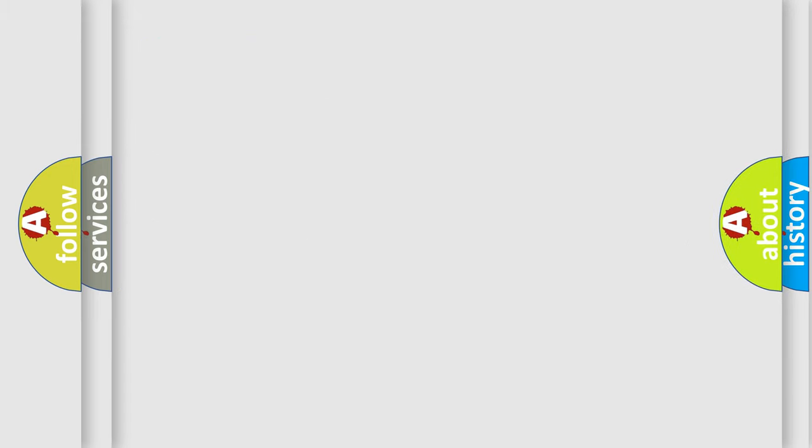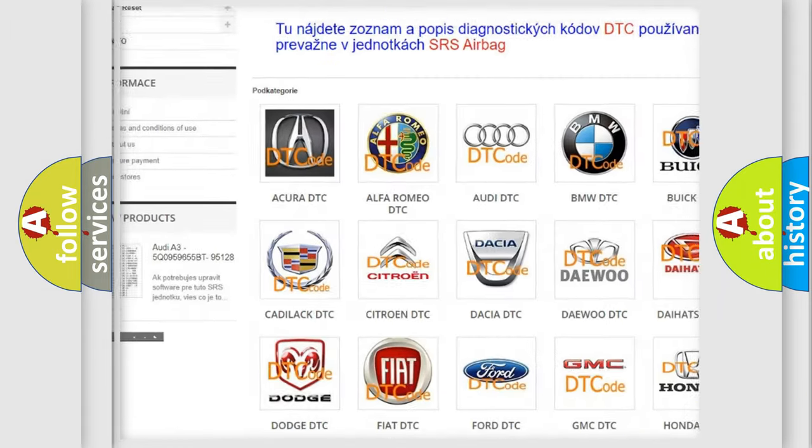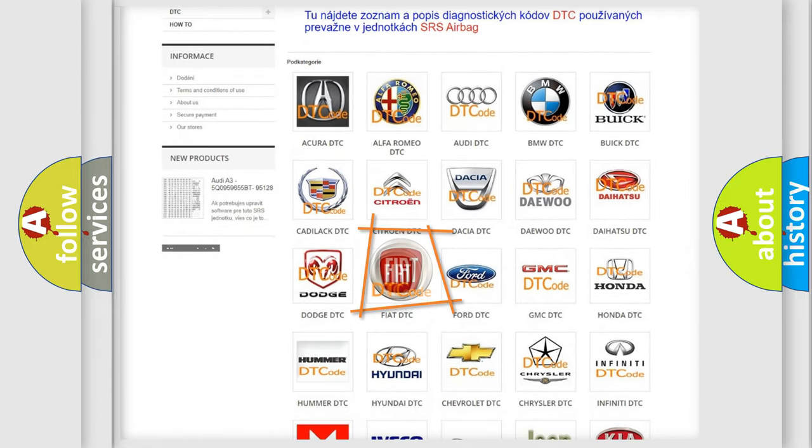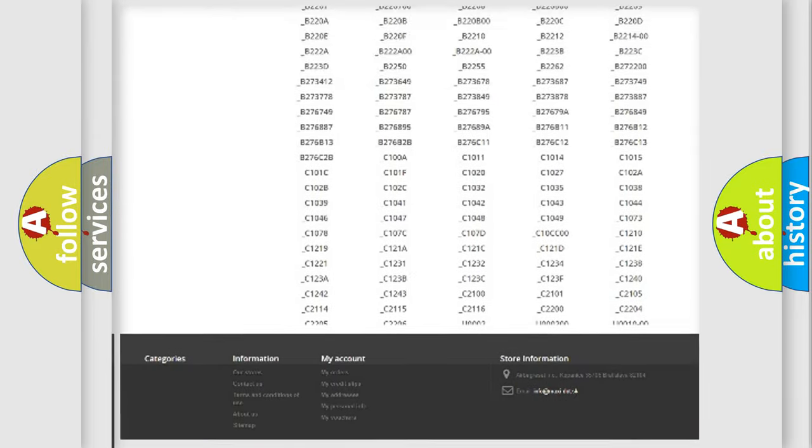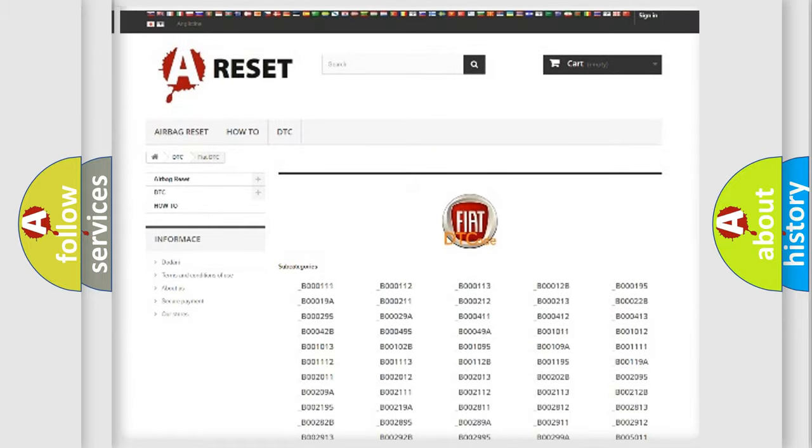Our website airbagreset.sk produces useful videos for you. You do not have to go through the OBD2 protocol anymore to know how to troubleshoot any car breakdown. You will find all the diagnostic codes that can be diagnosed in Fiat vehicles. Also many other useful things.